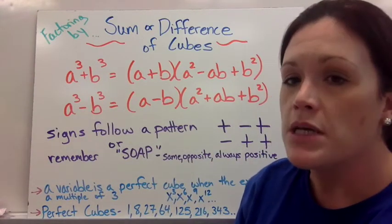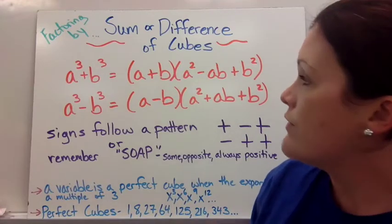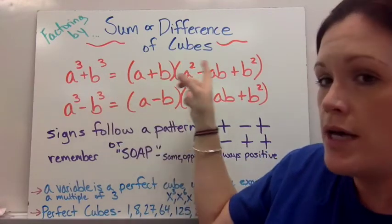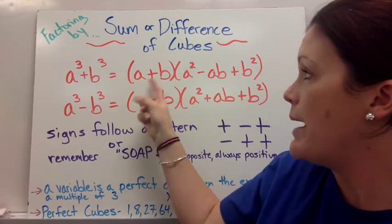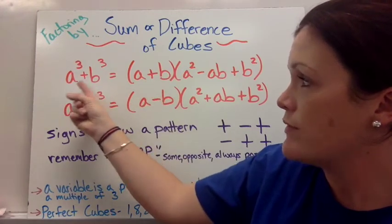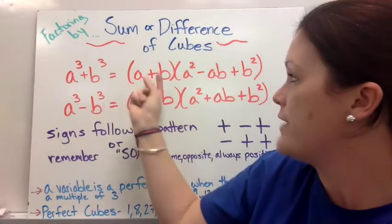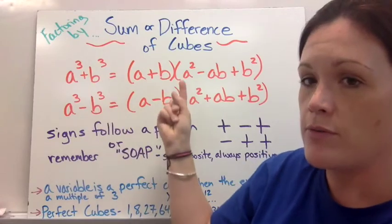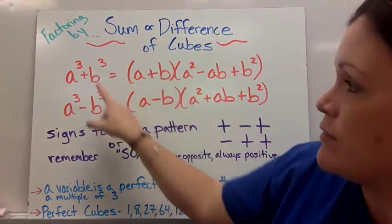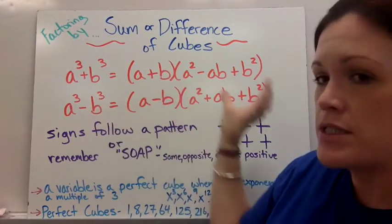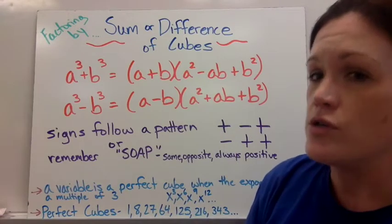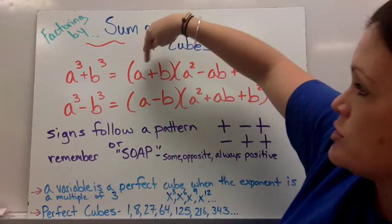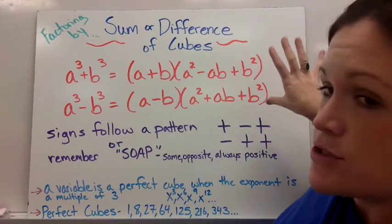So if I'm given a cubed plus b cubed, then it would factor into a binomial and a trinomial. In the binomial you put the cube root of each term, so the cube root of a cubed is a and the cube root of b cubed is b. The same if it were subtracting. The only difference here is going to be our signs. If you notice right here all the terms look the same, but the signs are different.